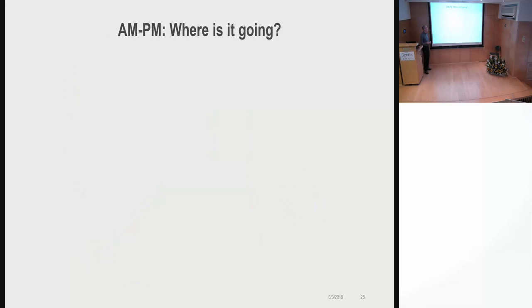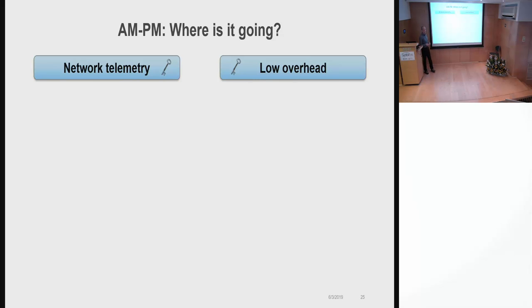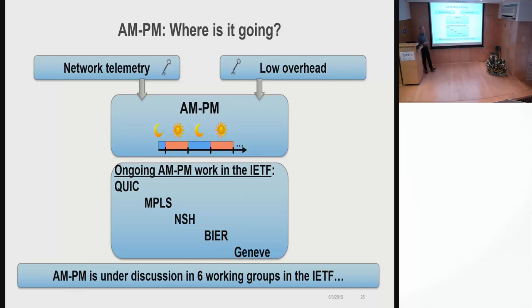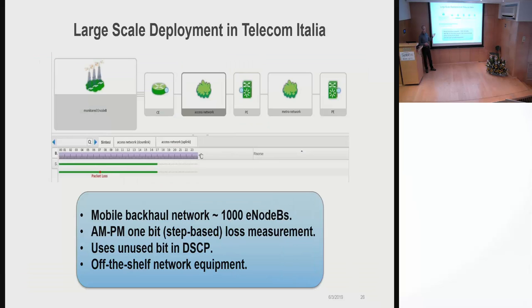A few words about where AMPM is going. We said that network telemetry is very important, and we also said that low overhead is important. So that's why we believe in AMPM. But it's not only us that believe in AMPM. AMPM is under discussion in the IETF in six different working groups in the context of various different network protocols. So it's currently evolving. But it's also actually deployed in a real network, in a mobile backhaul network of Telecom Italia with over a thousand E-NodeBs.